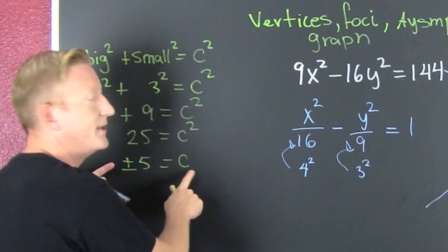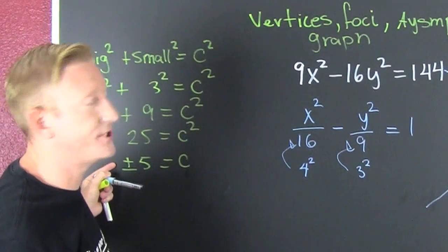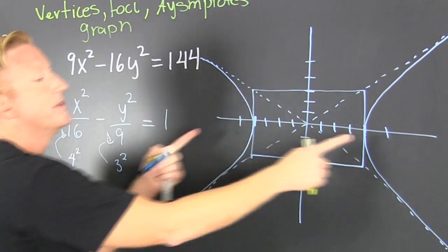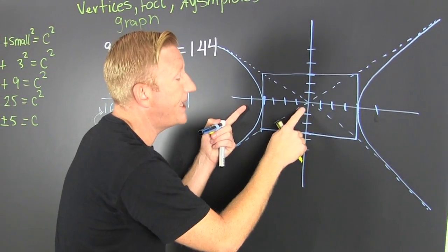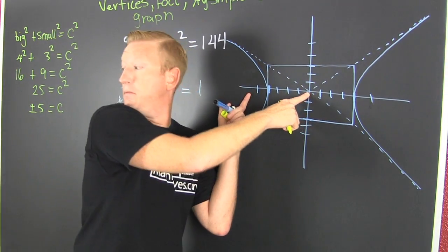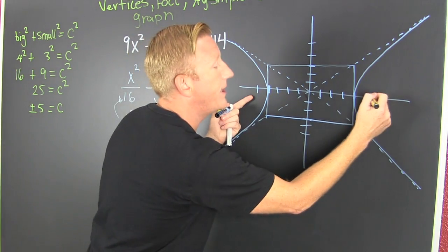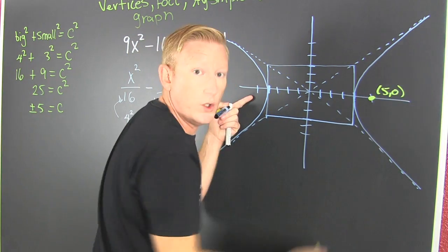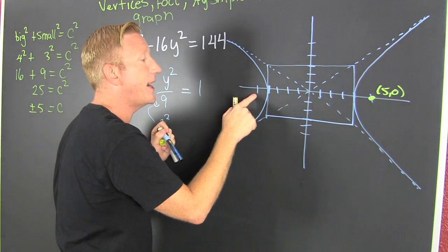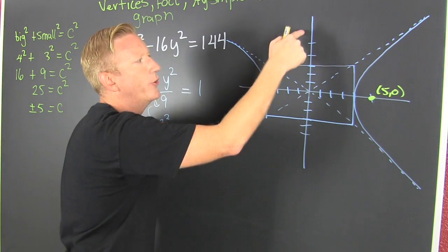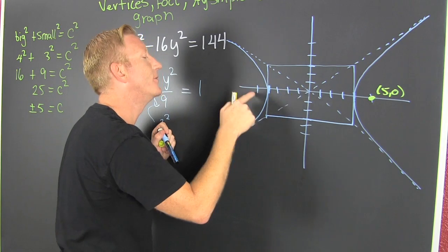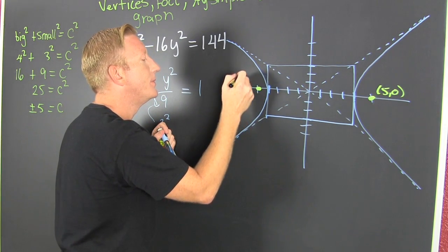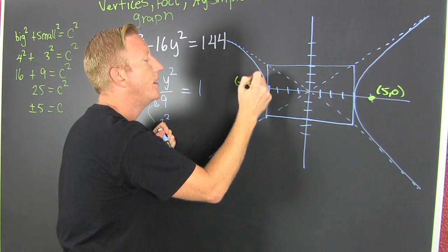Now, the foci lie on the major axis — the big one. They are on the inside of the cups. So I take that center and I add that 5 — that's the point (5, 0). And then I take that center and I subtract off from the x — not the y, because that would put you in the wrong place. The foci lie on the inside of the hyperbola, so that's minus 5, 0.